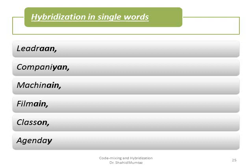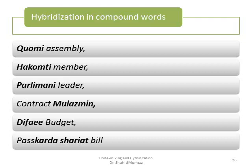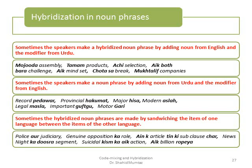Starting from the word level: examples of hybridization in single words include 'leader-on' — 'leader' is English and '-on' is a part of Urdu. At the compound word level we have examples like 'contract mulazimeen', 'defy budget', 'pass kardashriyat bill'. In noun phrases, speakers make a hybridized noun phrase by adding nouns from English and the modifier from Urdu — for example: 'maujood assembly', 'tamam products', 'achhi selection', 'ek bohot bada challenge', 'ek mindset', 'chota sa break', 'mukhtalif companies'.